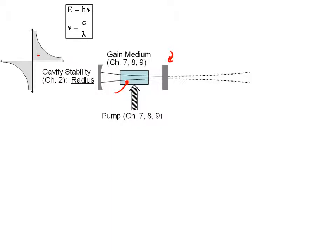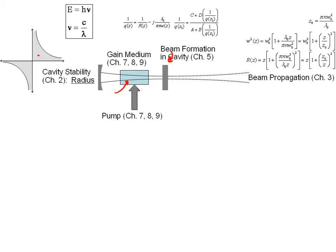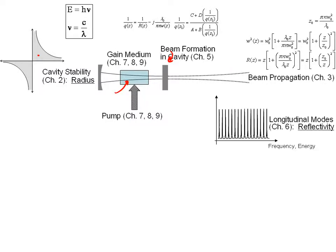We know the cavity creates a Gaussian beam, and we can write equations for that. We can predict what beam is going to be formed, and that's determined by the cavity mirrors and the spacing of the mirrors.